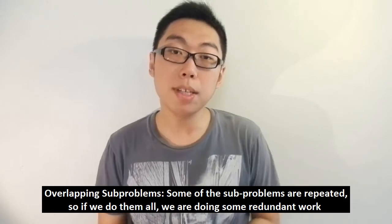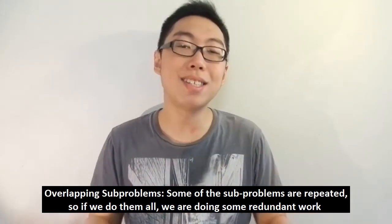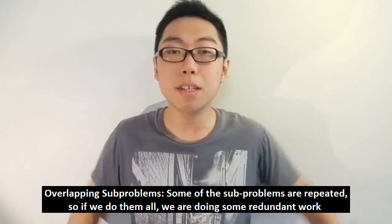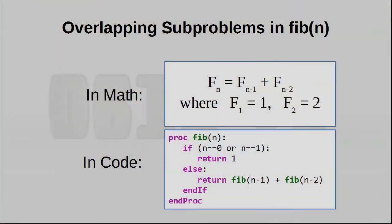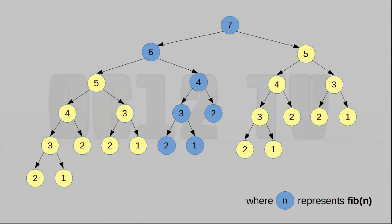Apart from optimal substructure, another thing that comes up a lot is what is known as overlapping subproblems. What this means is we can take our huge problem, break it down into subproblems, and when we look closely at these subproblems, we realize that some of them are identical. This means if we go ahead and do every single subproblem, we are actually doing some repeated redundant work. One classic simple example to demonstrate this is the Fibonacci function. Essentially, fib(n) is fib(n-1) plus fib(n-2). When we call fib(7), we end up with a lot of recursion, and in fact the recursion tree looks something like this. We are actually recalculating a lot of things many times — not just one instance of redundant computation, but entire subtrees of redundant computations.